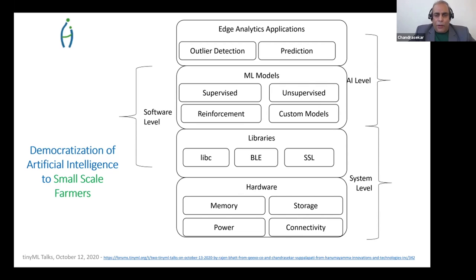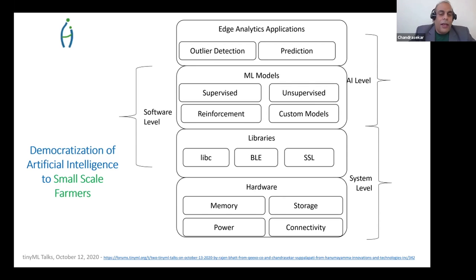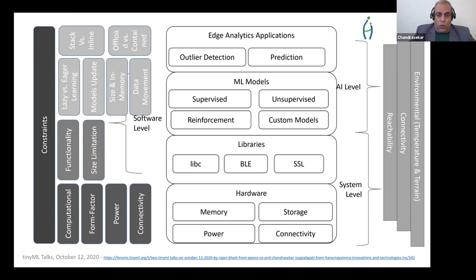The models we applied: we deployed supervised and some unsupervised models. Anything with DNN or artificial neural networks is very tough given the power requirements. We use very small libraries and connectivity over BLE. This is what our structure looks like — a very small, mother-of-all-libraries approach with BLE connectivity.